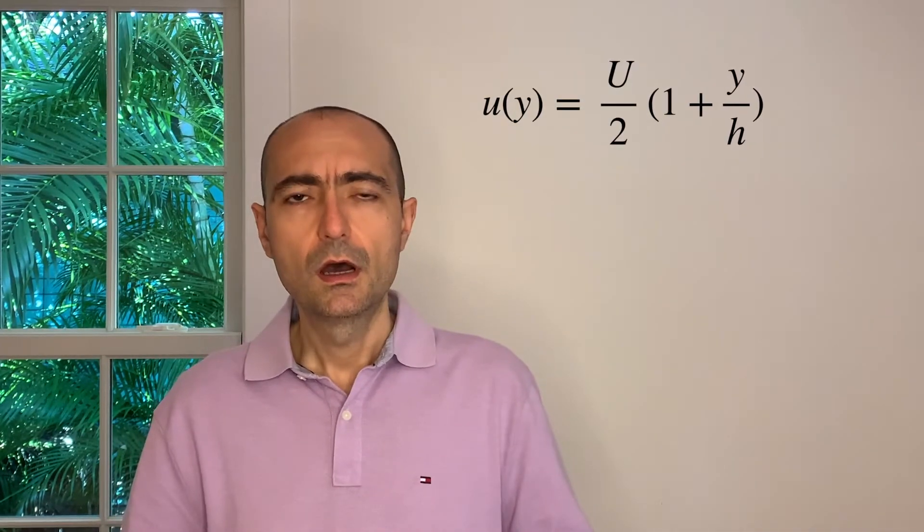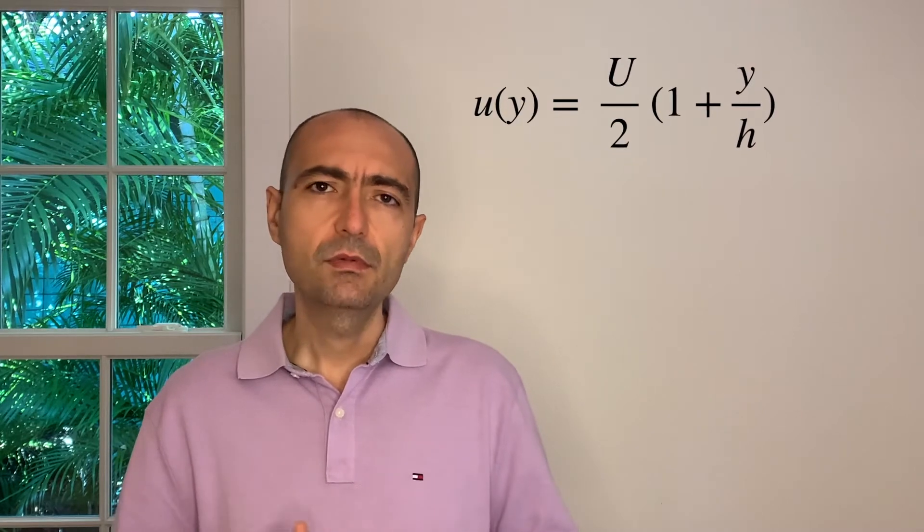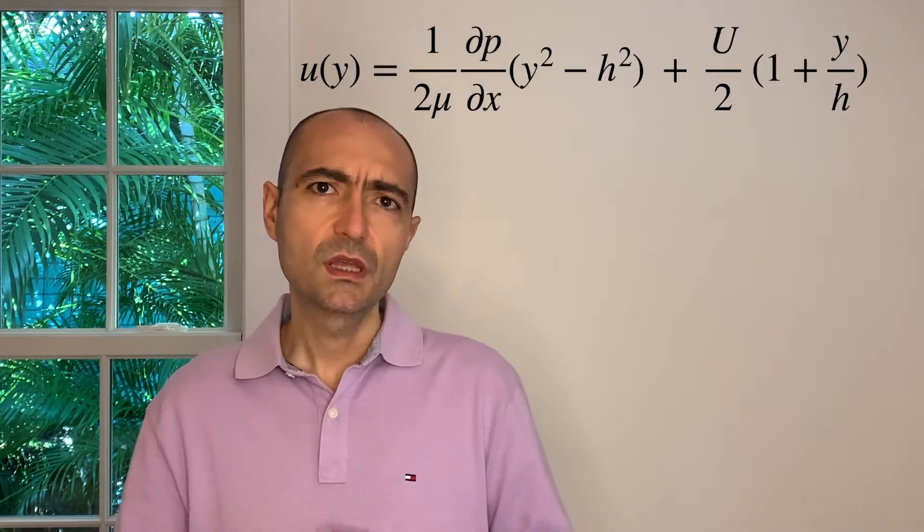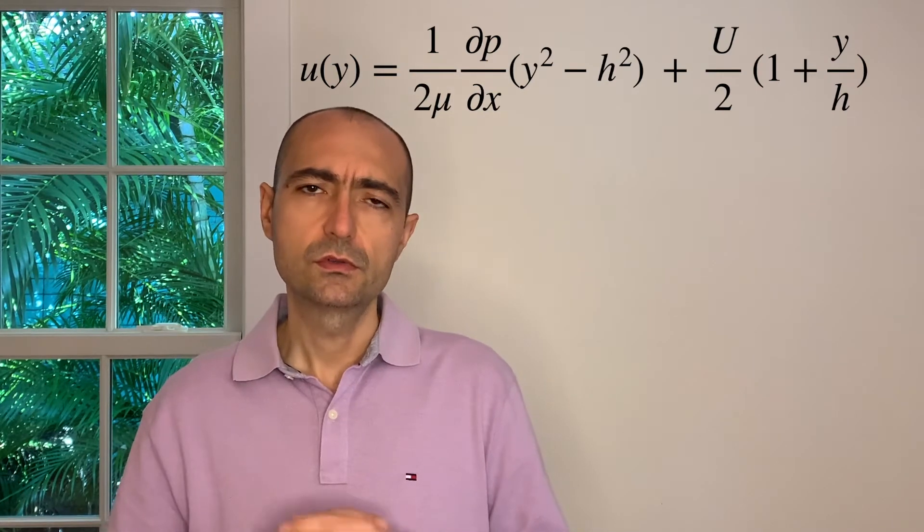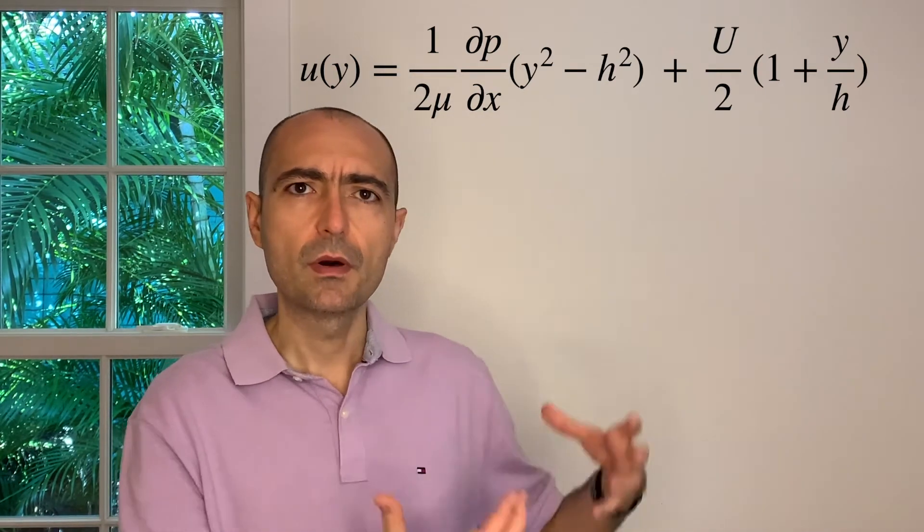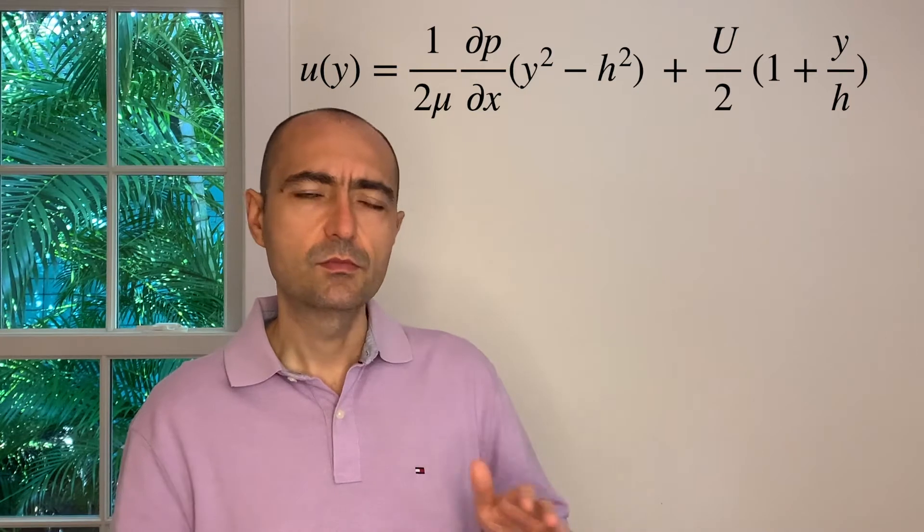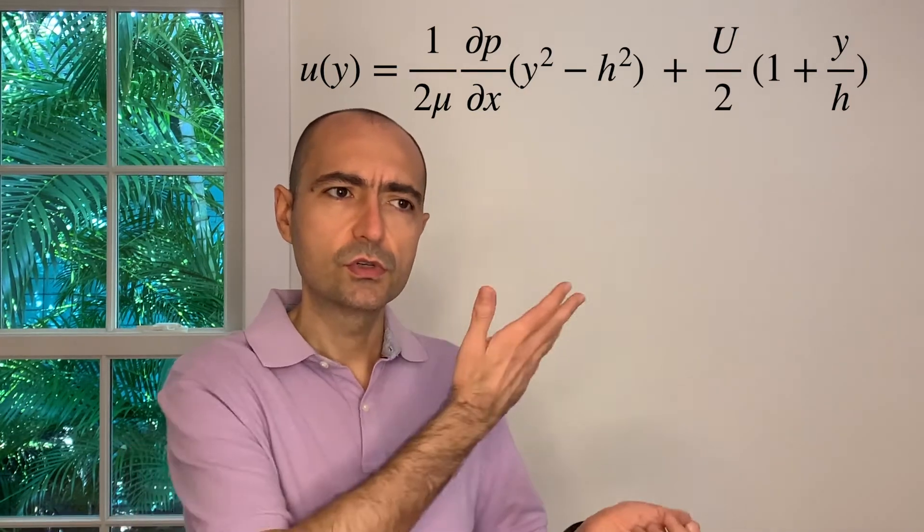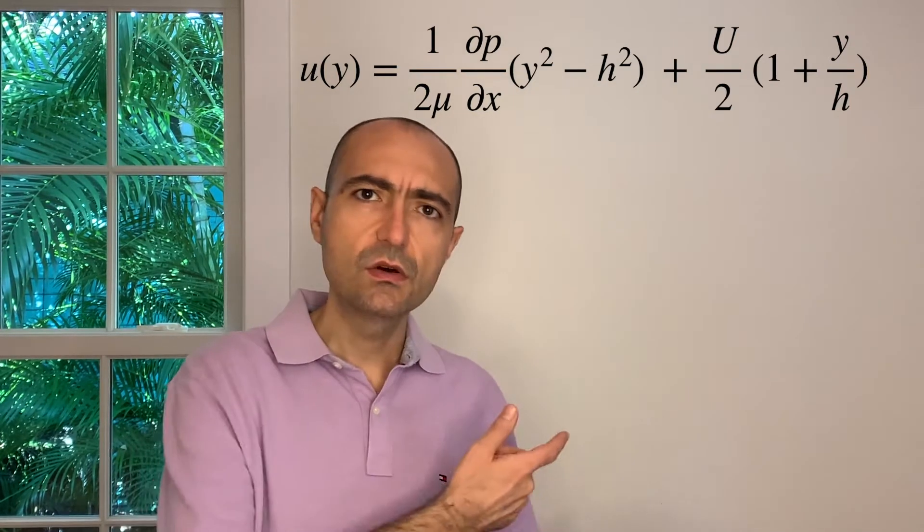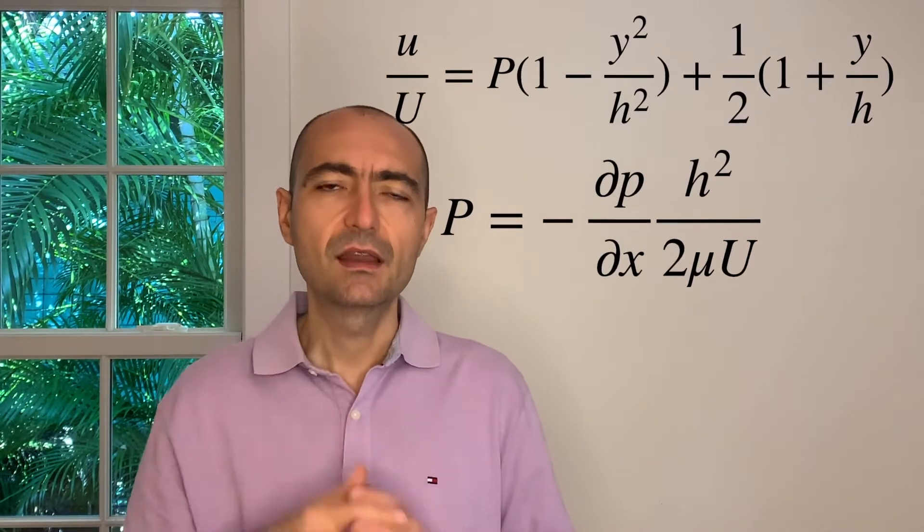But also things get a little bit more complicated if I have pressure gradient. But the good thing was I was able to superimpose the solutions and add them up. Because in one case I can say the pressure gradient is zero and there's a motion. In the other case, the motion is zero but there's a pressure gradient. And I sum them up and I come up with a value.